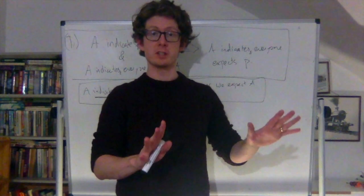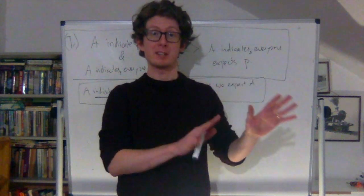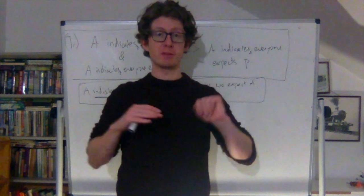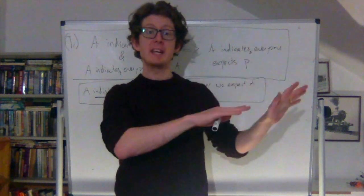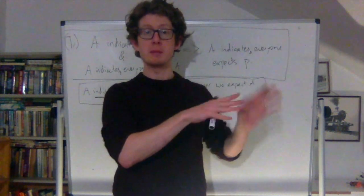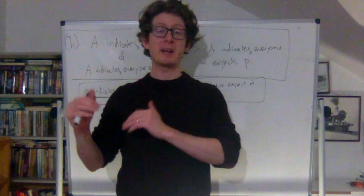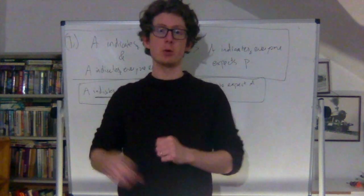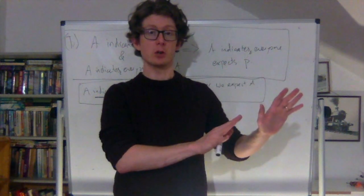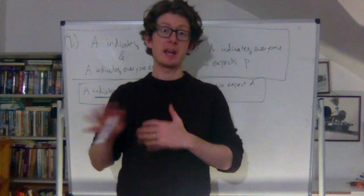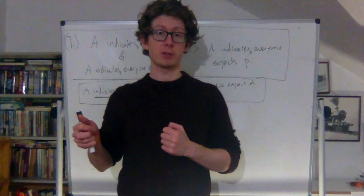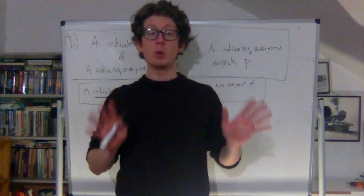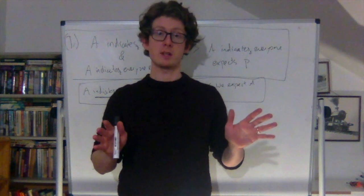In the last video, I asserted that when common expectation holds in Lewis's sense, then mutual expectation holds at every level. So if you commonly expect p among a group of people, then that group of people mutually expects p, they mutually expect that they mutually expect p, and so on. We saw that if that connection holds, then we can explain the counterexamples to the first definition of convention. However, I didn't say why that connection holds, and I want to in this video give you some more sense of why that is.